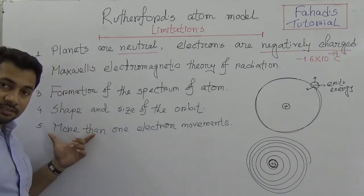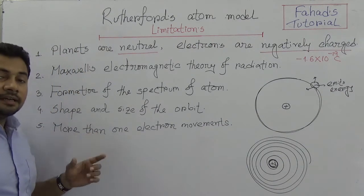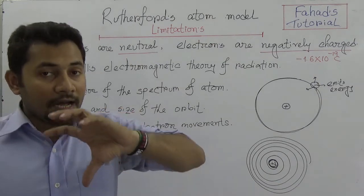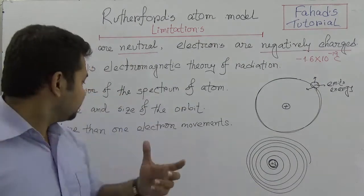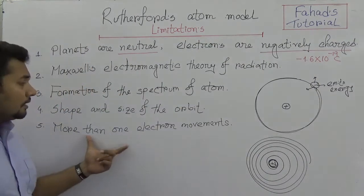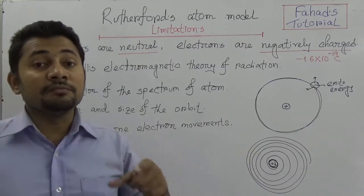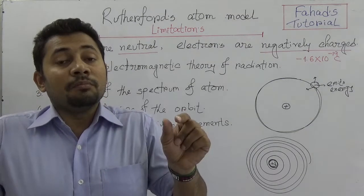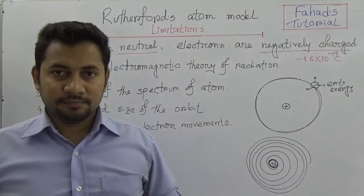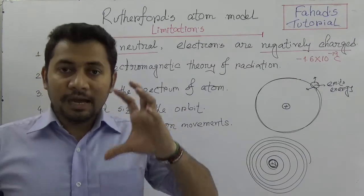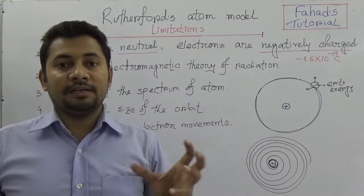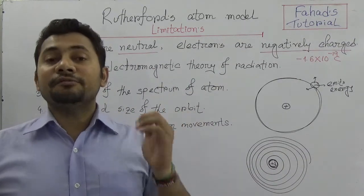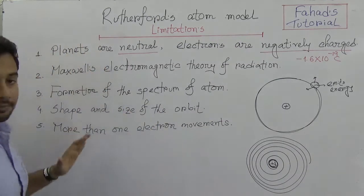The fifth limitation is that Rutherford did not state how electrons would move if there is more than one electron in an atom — how they would be organized and how they would be configured around the nucleus. So these are the five limitations of Rutherford's atomic model.